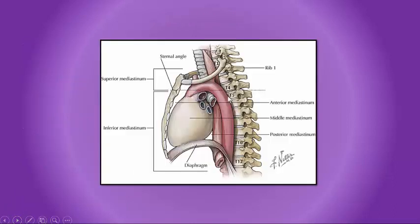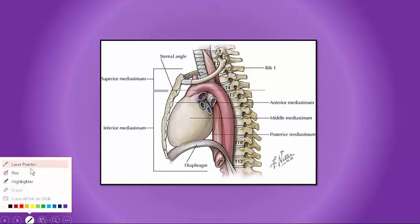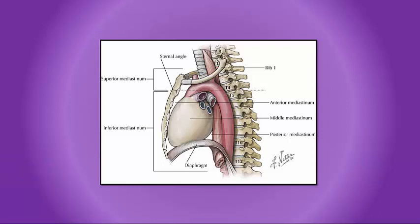In the figure, this is the T4-T5 vertebra posteriorly — this is the level of the sternal angle of Louis. We can see the arch of aorta here, then the bifurcation of the trachea, also known as the carina. Here we can see the bifurcation of the pulmonary trunk. The left recurrent laryngeal nerve loops around the arch of aorta, and the ligamentum arteriosum connects the pulmonary trunk and the arch of aorta.